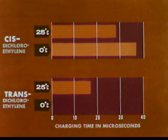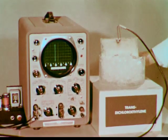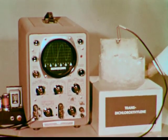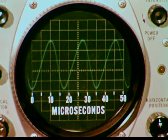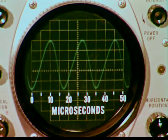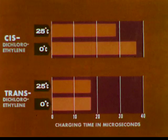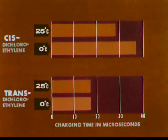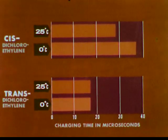Since transdichloroethylene is a nonpolar substance, there is no alignment between the plates. Therefore, varying the temperature should have little effect on the charging time. After chilling, the charging time is still 17 microseconds. So we see that at zero degrees, the charging time for transdichloroethylene is the same as at room temperature. These effects of temperature upon charging time give further evidence that our model is correct.